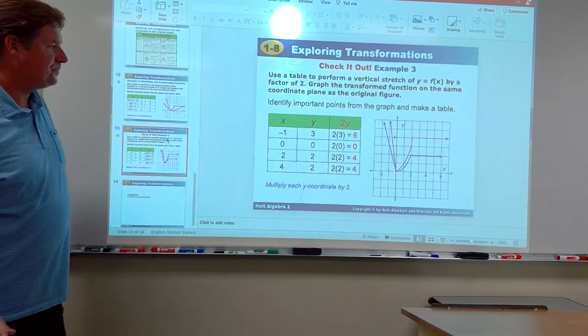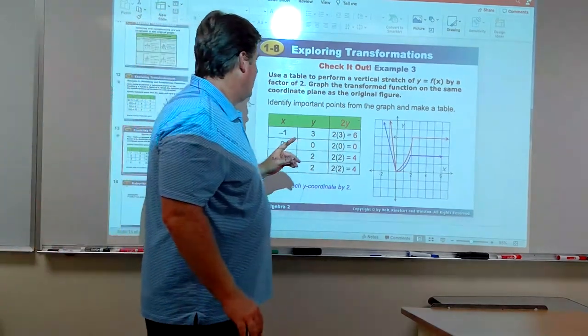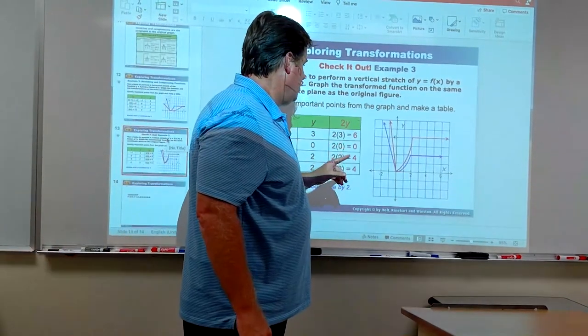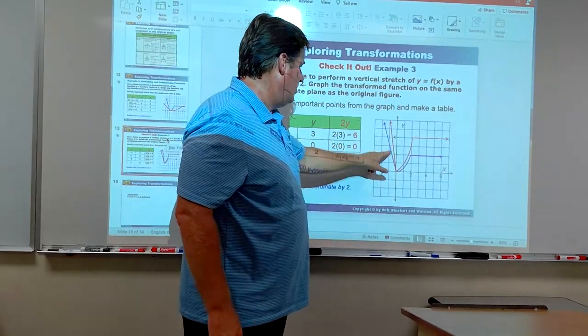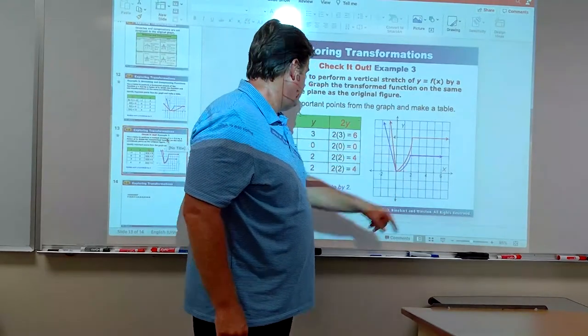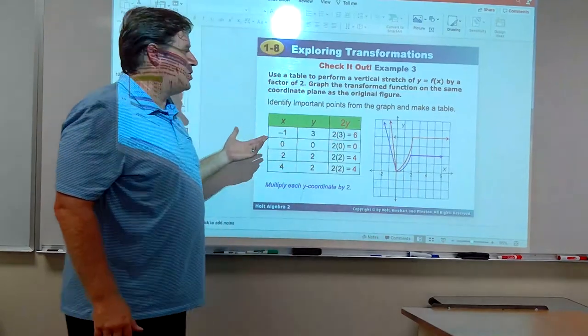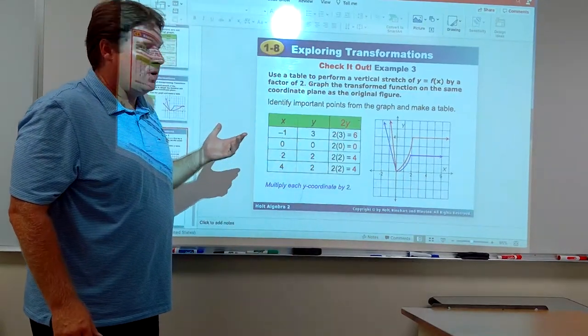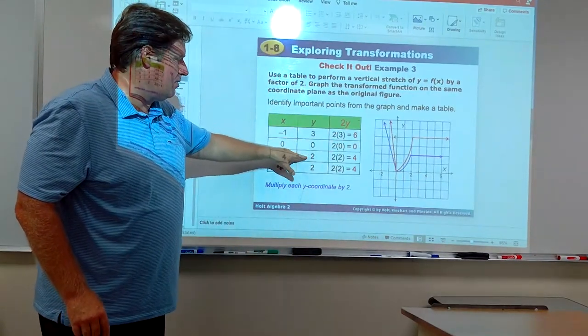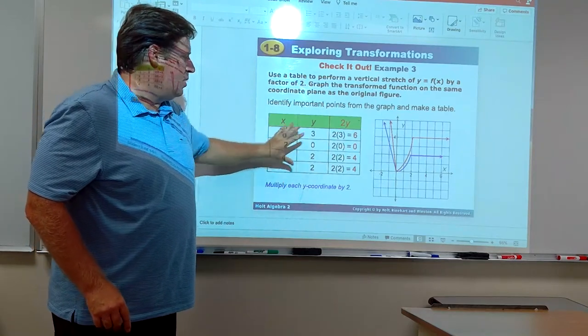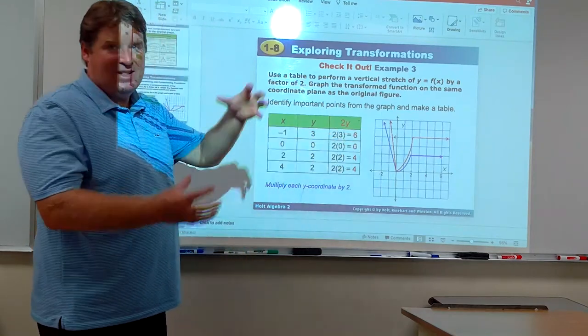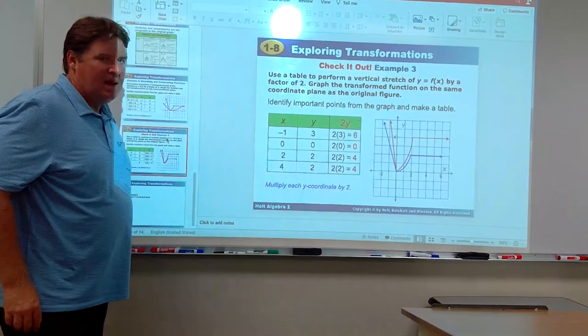How about this one? Let's start with the blue graph. Let's choose the points. I think we had (-1, 3), again, (0, 0), (2, 2), and (4, 2). This time, let's say we wanted to stretch it vertically by two. Well, now, we just multiply all the y values by two. So, 6, 0, 4, and 4. Those become the y coordinates. Then we just re-graph it. You can kind of see it looks like it's vertically stretched.